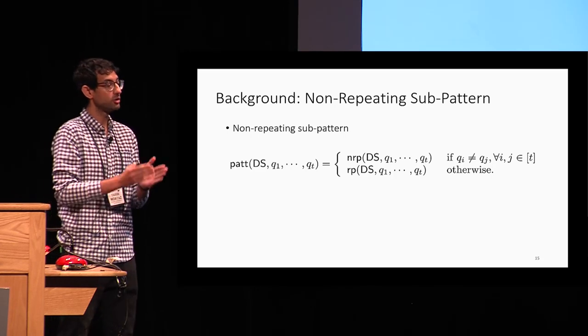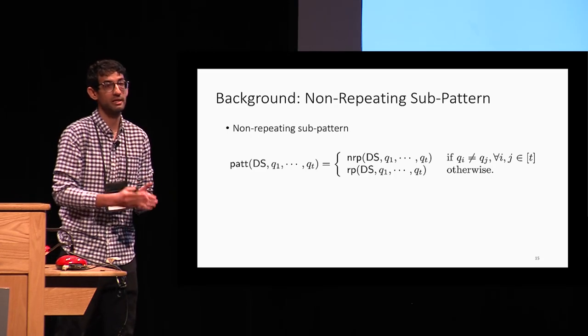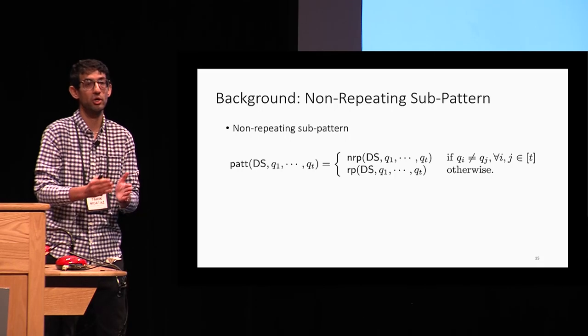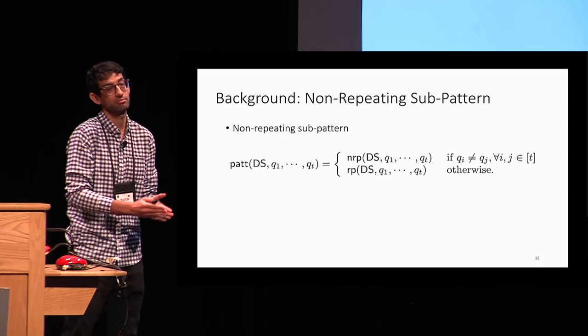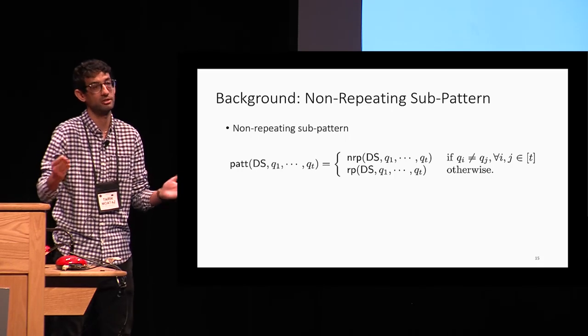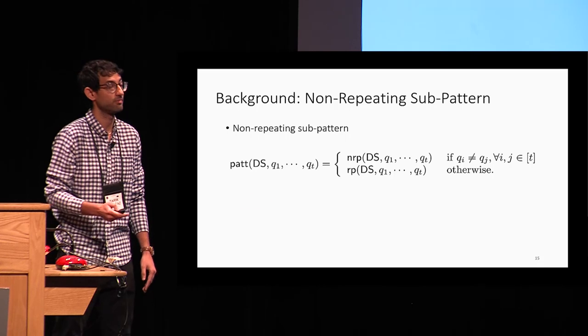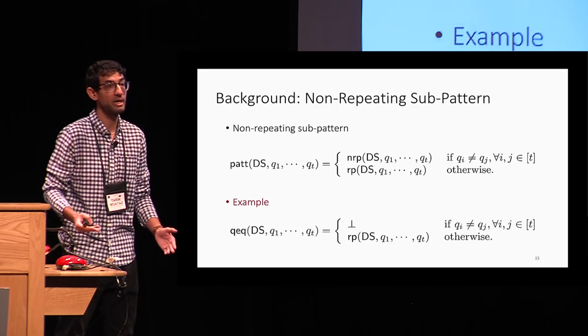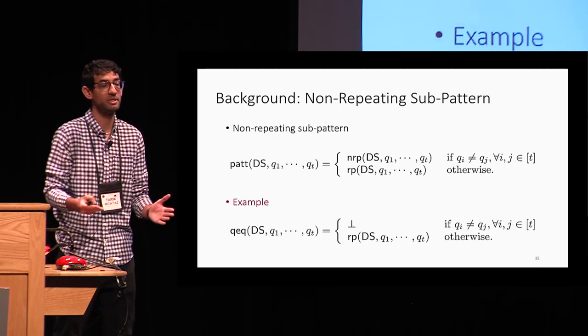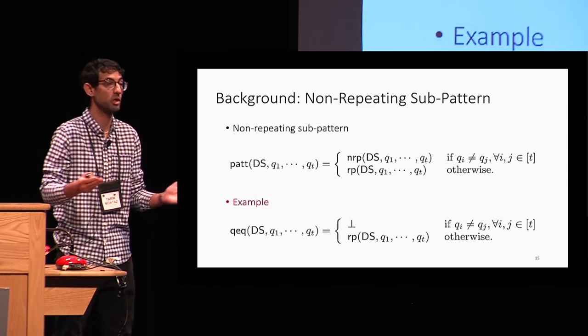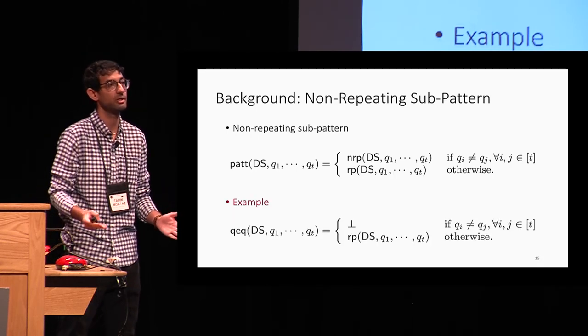The repeating pattern is the leakage that occurs on the other sequence of queries. For example, the query equality has a non-repeating pattern which is equal to nothing.